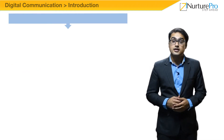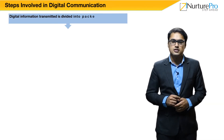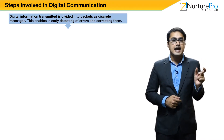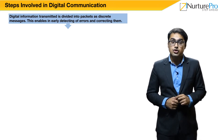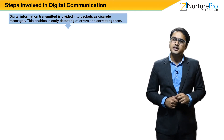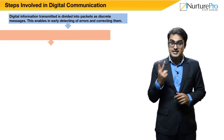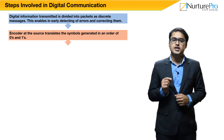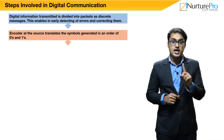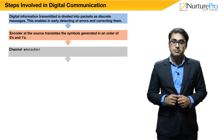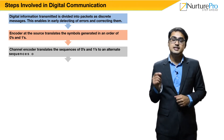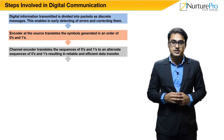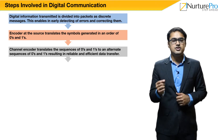Let's now understand the steps involved in digital communication. In the first step, the digital information transmitted is divided into small packets as discrete messages. It ensures detecting errors and correcting them at early stages. In the second step, the information codec equipment codes the information into binary bytes — that is, in the order of zeros and ones. In the third step, the channel encoder translates the sequences of zeros and ones to an alternate sequence of zeros and ones, resulting in reliable and efficient data transfer.